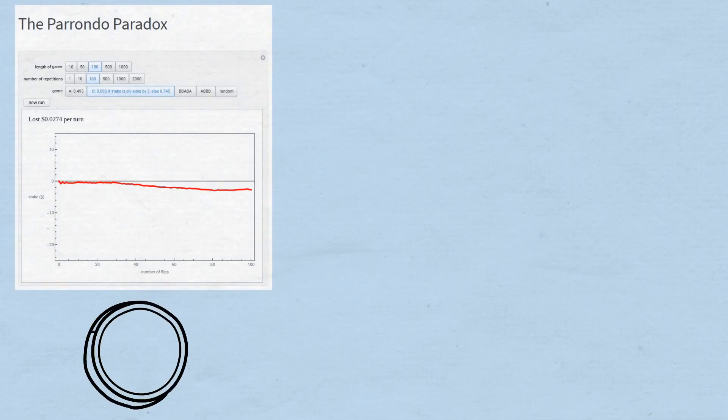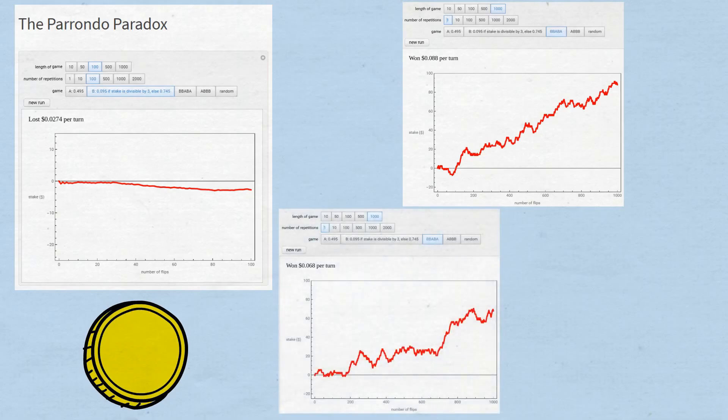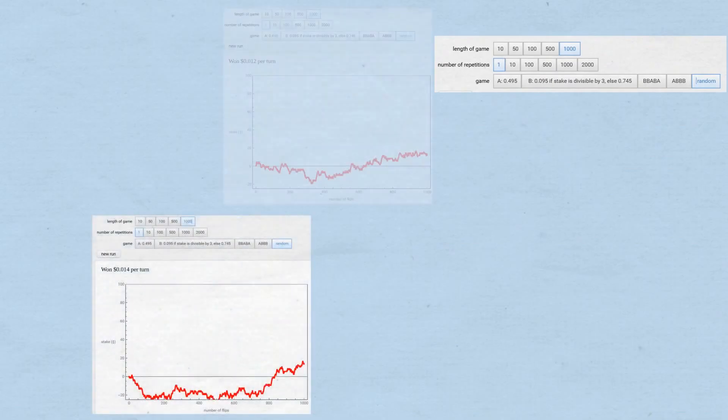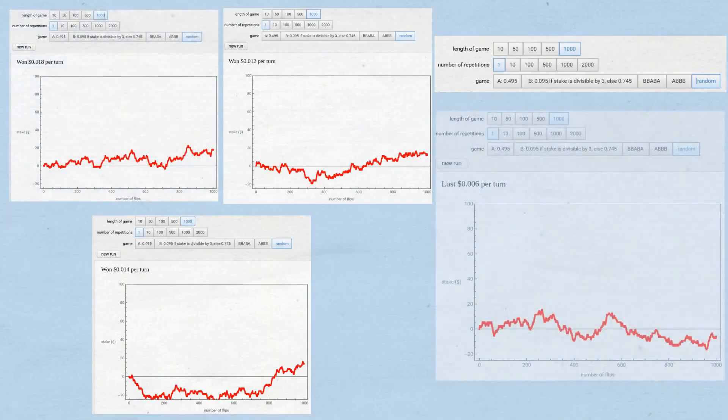Using Parrondo's original biased coin probabilities, which closely match our roulette examples, when you set it to alternate between games in a specific pattern, you clearly win over time. But the remarkable discovery is what happens when you choose randomly between Game A and Game B. Most individual sessions of 1,000 random alternations produce wins, though occasionally variance causes short-term losses.